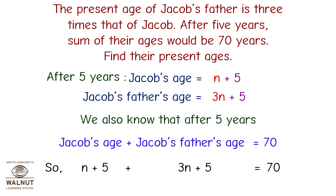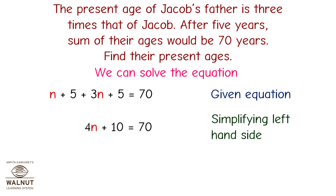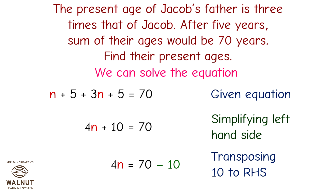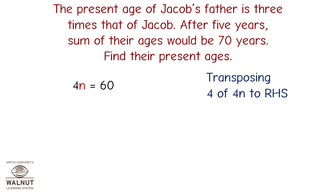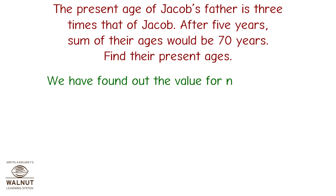We can solve the equation now. Simplifying the LHS, we get 4n plus 10 equals 70. Transposing 10 to the RHS, therefore 4n equals 70 minus 10, which equals 60. Transposing 4 to the RHS, therefore n equals 60 divided by 4, which equals 15.